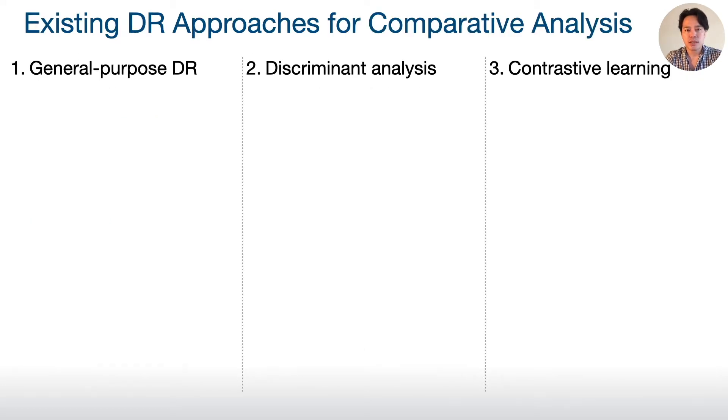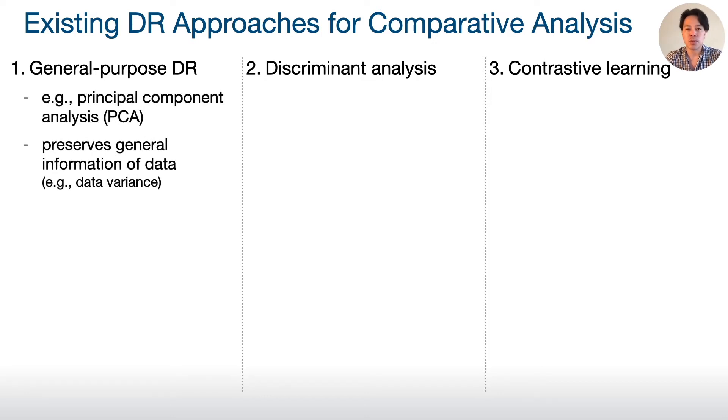In general, there are three existing dimensionality reduction approaches for comparative analysis. The first one is using general-purpose dimensionality reduction methods, such as PCA. This type of dimensionality reduction preserves general information of data, for example data variance, when using PCA.